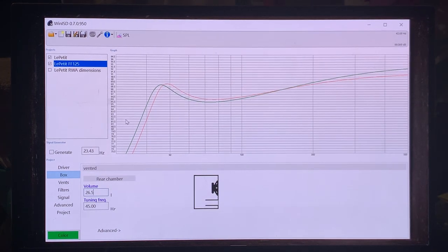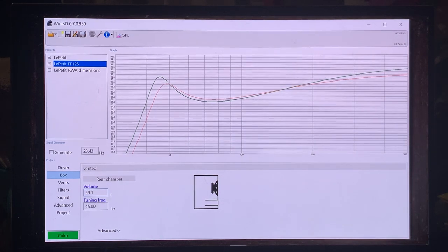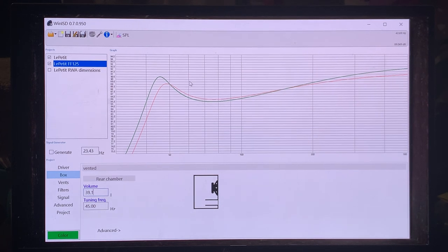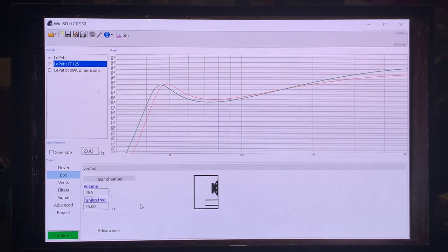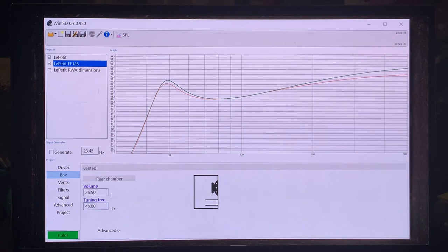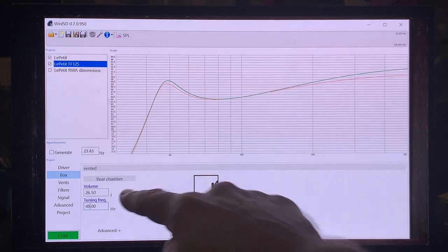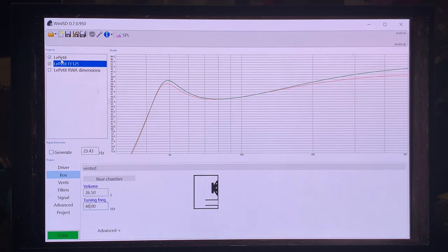But you can get more of the capacity of this driver if you increase a little bit the volume to 39 liters. It will be a little bit bigger cabinet, but now the bass will be quite a bit stronger. What we could do is also tune the cabinet even lower. Oh actually now, wait a sec, I made a mistake here before. So let's just go back, 26.5 liters, but the original tuning of the Lepeti was this. Sorry guys, let's just cancel everything I said, because I did not adjust the tuning frequency back to the original Lepeti.